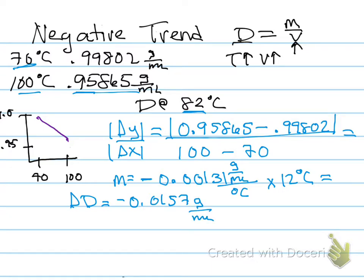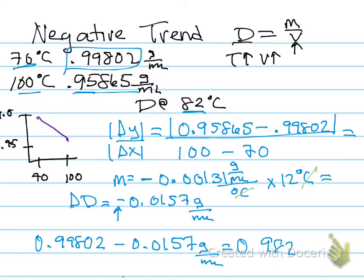So we've canceled the degrees Celsius. So the change in density, and so I'm going to start with my density at 70 degrees, which is 0.99802, and subtract the change because it's a negative correlation. You can tell that because the slope is negative. And so our answer here is going to be 0.98232 grams per milliliter.